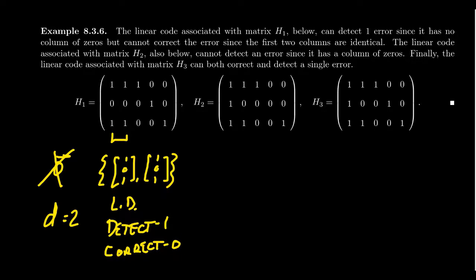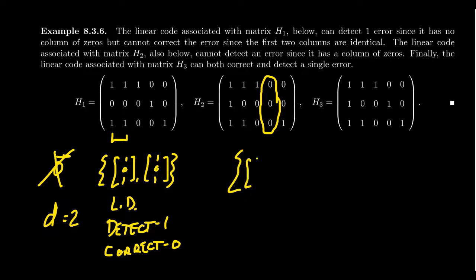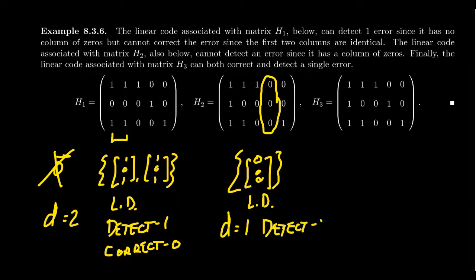If we look at H2: scanning... we have a column of zeros, which means the singleton set of the zero vector is linearly dependent. This means D equals 1, which means our detection level is 0, and our correction level is also 0. So this is essentially a useless code — you wouldn't want to use this matrix. At least for H1, you could detect an error; it has some efficacy to it.